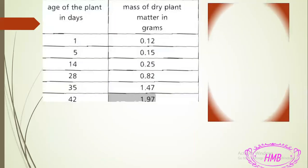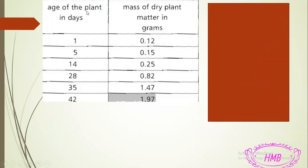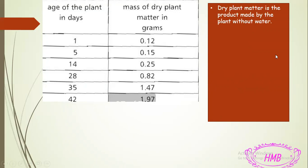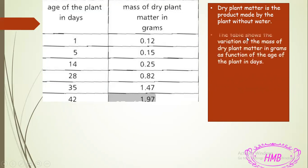Now we have a table. One column is for the age of the plant — we are studying a plant growing from day one until day 42. What we are studying is the mass of dry plant matter. The dry plant matter is the organic matter made inside the plant but without water, so dry plant matter means the organic product made by the plant without water.